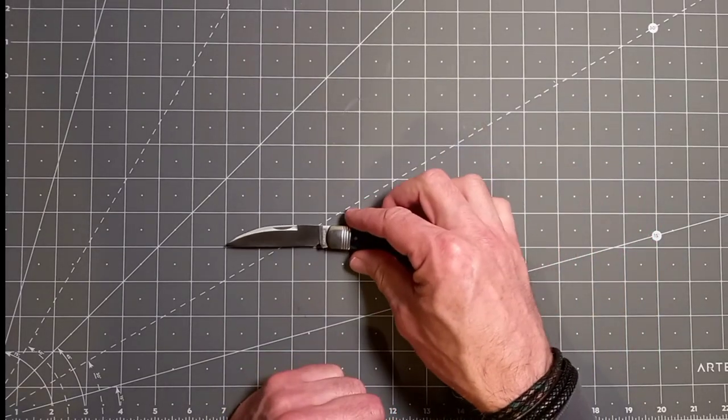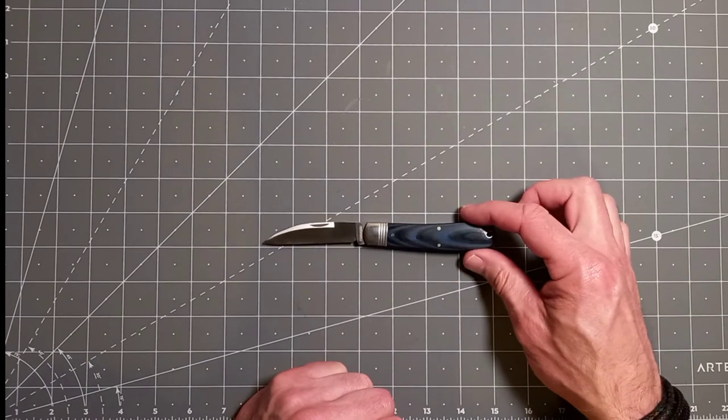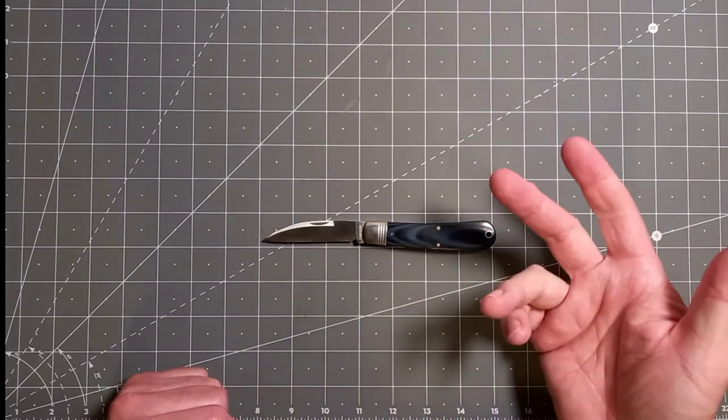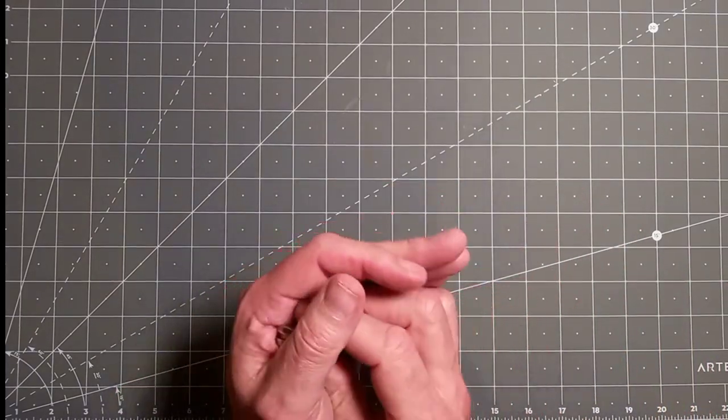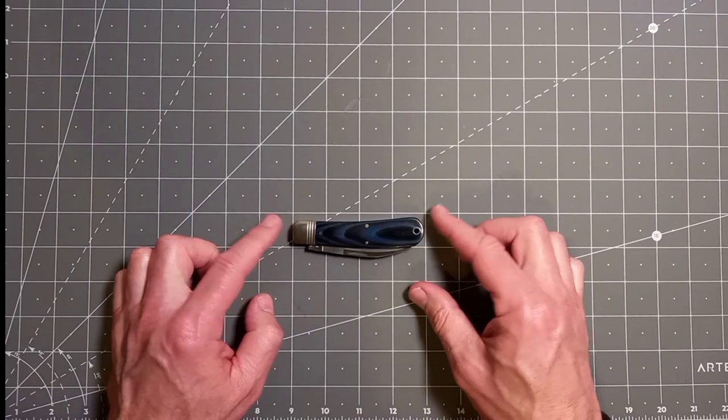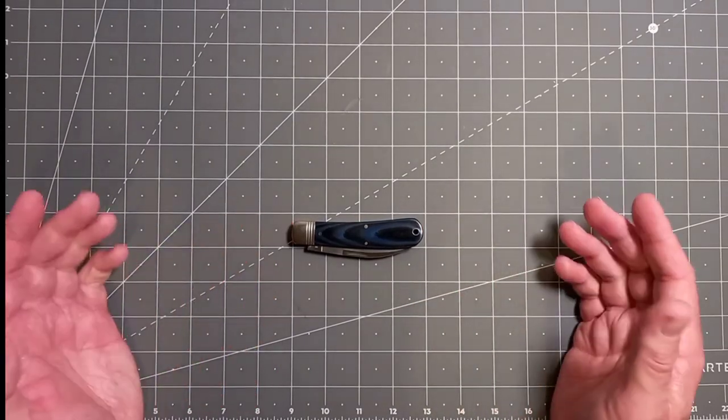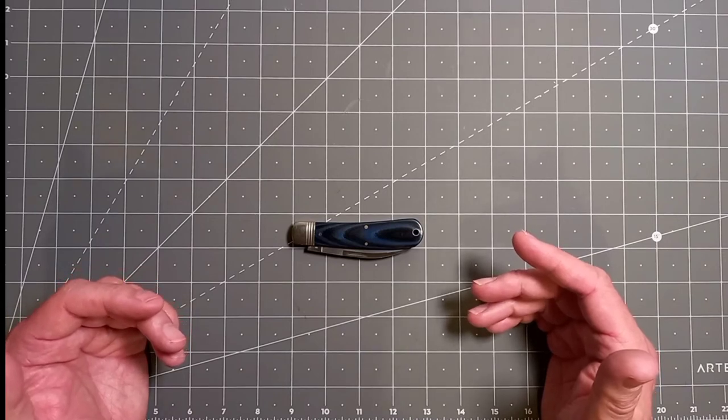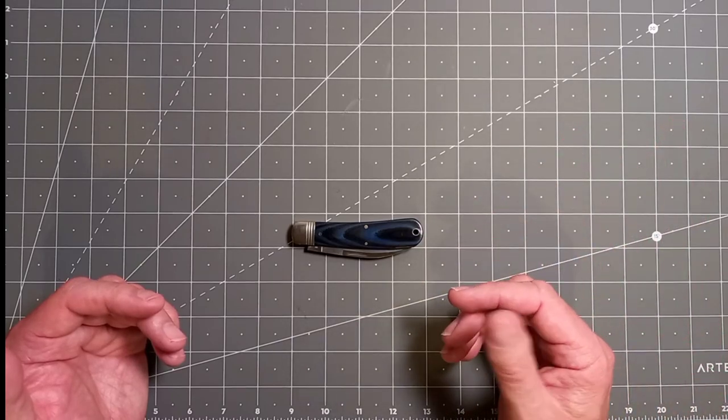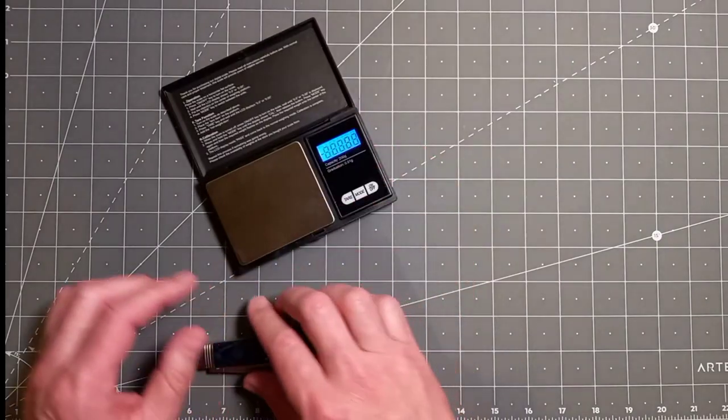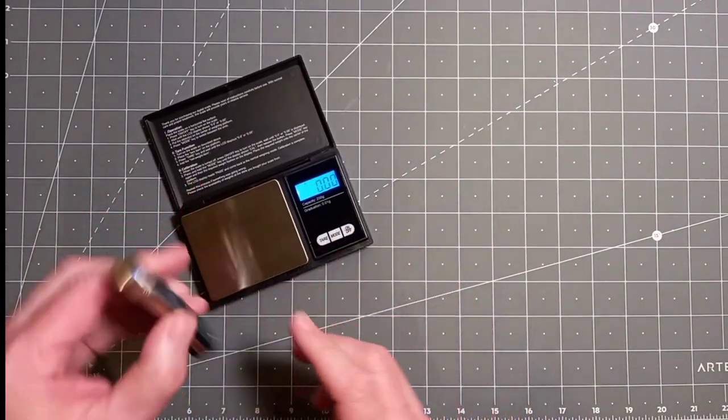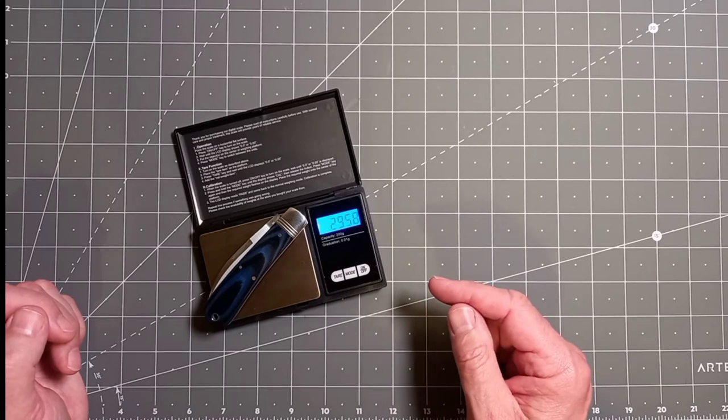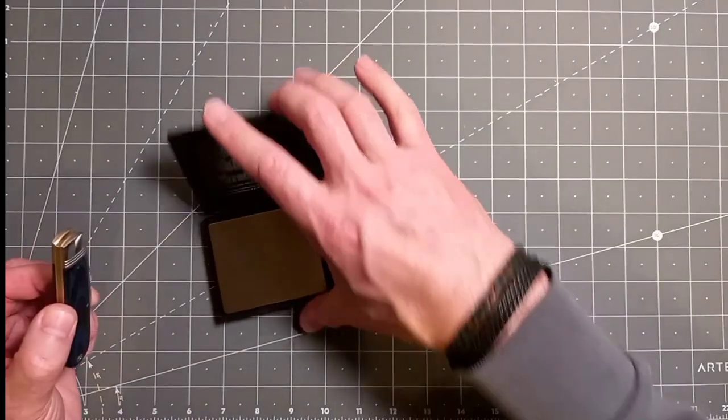Overall length would be, let's have a look, about six and seven eighths or 17.5 centimeters. The closed is going to be just under four inches. There you go, the closed is about three and seven eighths, about 95, 97, 98 mil, so just over nine and a half centimeters. The weight on this is quite heavy. You've got a knife in your hand. 83.8 grams and 2.95 ounces, so just under three ounces.